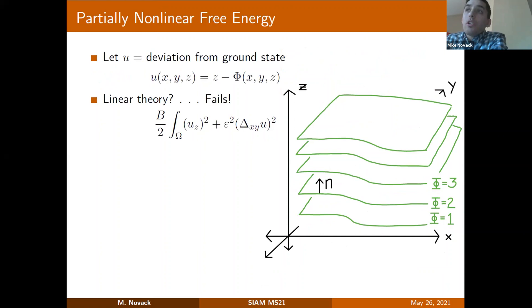There's this inherent frustration between these two terms because, in general, equally spaced layers is incompatible with curvature. The only situation in which both of these terms vanish is the trivial one in which you have equally spaced flat layers. That's part of what makes an energy like this interesting to study. So that's the full free energy. We're going to look at a derivation of it, if you will, that I'll call the partially nonlinear free energy. In order to motivate it, let's first see what happens if we try and construct a linear theory.